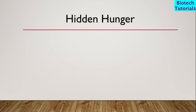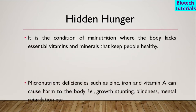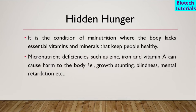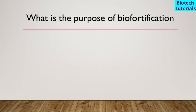That is hidden hunger. Hidden hunger is the condition of malnutrition where the body lacks essential vitamins and minerals that keep people healthy. Micronutrient deficiencies such as zinc, iron, and vitamin A can cause harm to the body — growth stunting, blindness, and mental retardation. Nearly two billion people are affected globally.